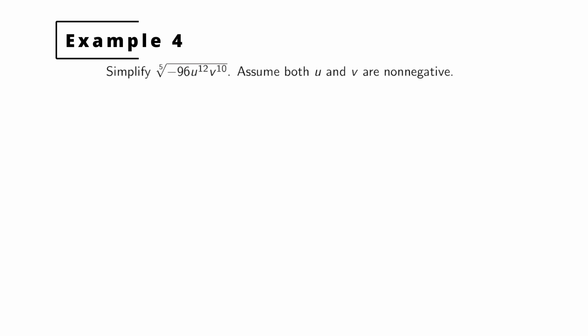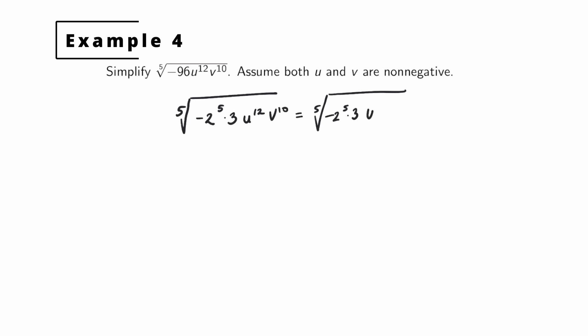Our final example: find the fifth root of negative 96 u to the 12th v to the 10th. We start with the prime factorization of negative 96. Since 96 is 32 times 3 and 32 is 2 to the 5th, this becomes negative 2 to the 5th times 3, times u to the 12th, times v to the 10th. We split up the powers of u and v: the largest power of u that's a multiple of 5 is u to the 10th, leaving u squared. V to the 10th is already a multiple of 5, so we're good there.